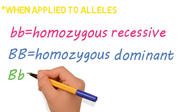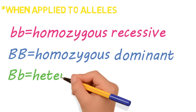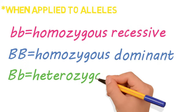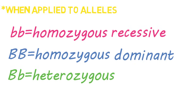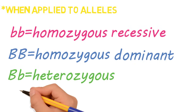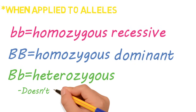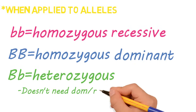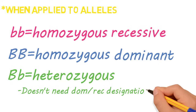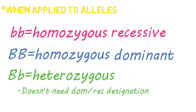A pairing of big B, little b, would be heterozygous. You wouldn't assign dominant or recessive to the last pairing because it's the only heterozygous option, so it needs no further distinction.